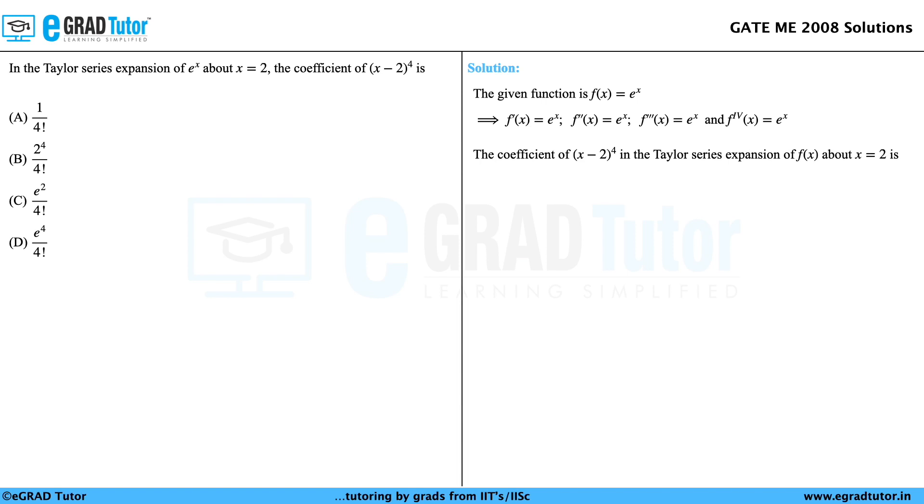The coefficient of (x - 2)^4 in the Taylor series expansion of f(x) about x = 2 is a4 = f^(4)(2) / 4!, which gives e^2 / 4!. The correct answer to this question is option C.